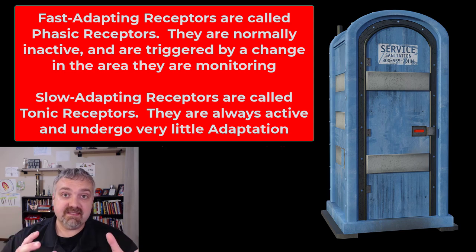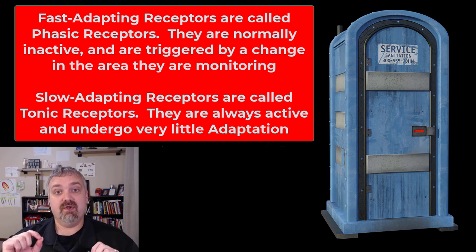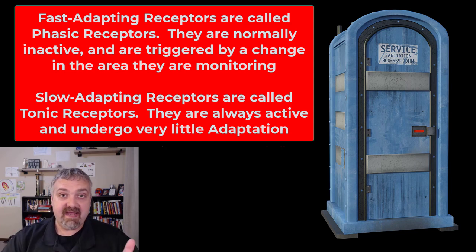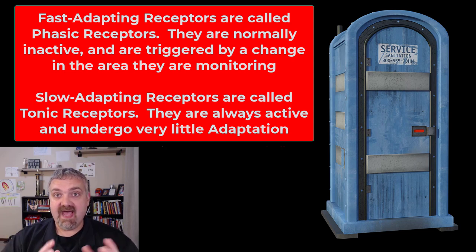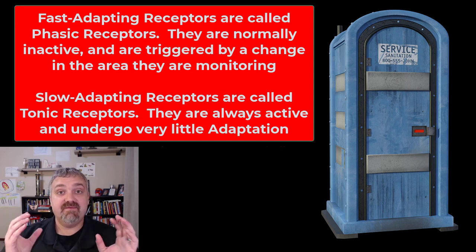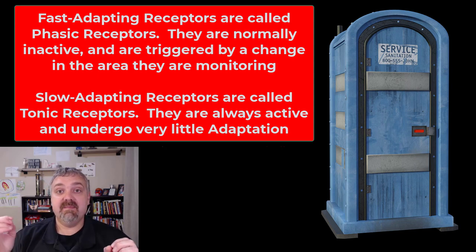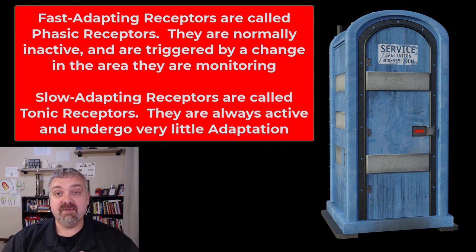Whether or not you stop sensing something depends on the type of receptor. Phasic receptors, also called fast-adapting receptors, respond to change — they're usually off, triggered when there's a change, then turn back off. Thermoreceptors are the textbook example. Tonic receptors are slow-adapting and always on — as long as there's a stimulus, you're going to know it. Nociceptors, your pain receptors, are an example of tonic receptors.